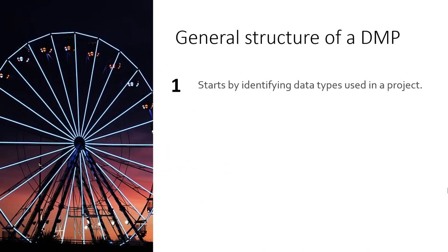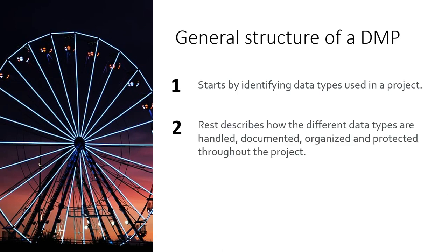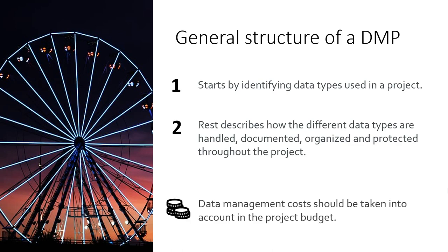A DMP should start with basic information about the research project. The first part of a DMP lists the data types used in the project. The rest of the DMP describes how the different data types are handled, documented, organized, and protected throughout the project lifecycle and what standards will be used. Remember that data management costs should be taken into account in the project budget.